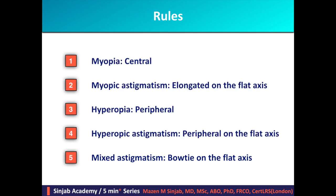To summarize the rules of ablation profile treatment: in myopia it is disc-shaped and central; in myopic astigmatism it is elongated on the flat axis; in hypermetropia it is annular and peripheral; in hyperopic astigmatism it is peripheral on the flat axis; and in mixed astigmatism it is a bow tie on the flat axis.